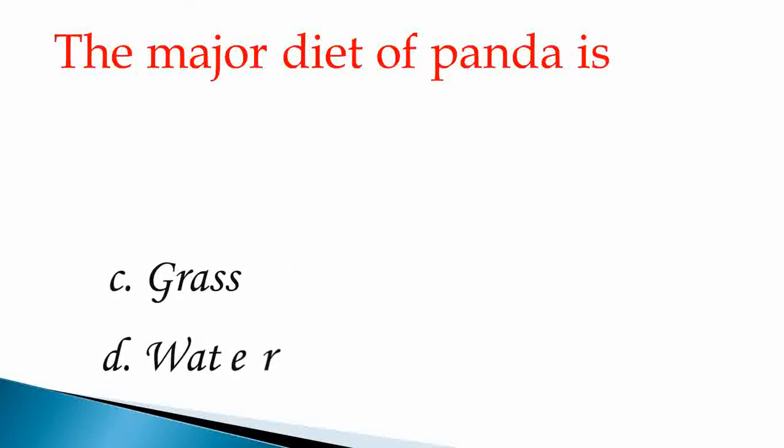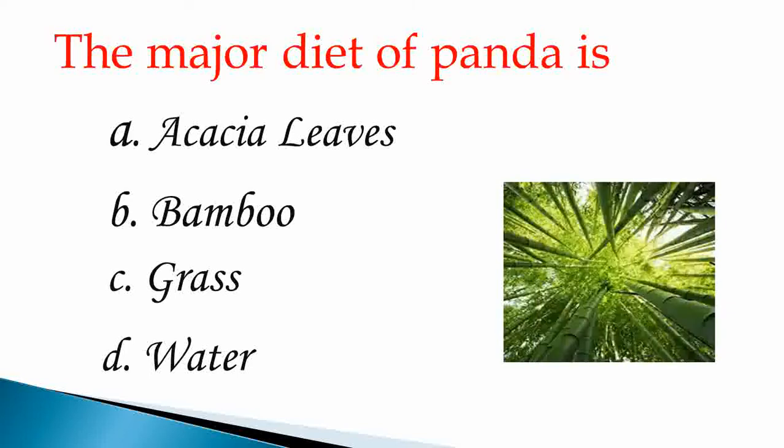Next question. The major diet of panda is Option A: Acacia Leaves. Option B: Bamboo Leaves. C: Grass. Option D: Water. Our answer is Option B, Bamboo.